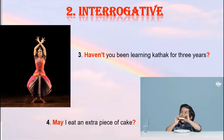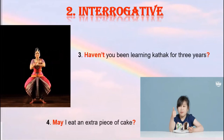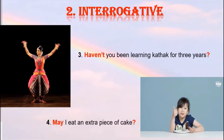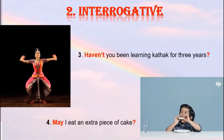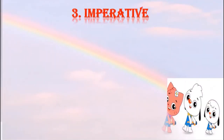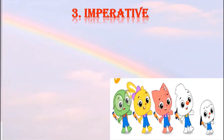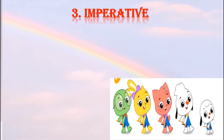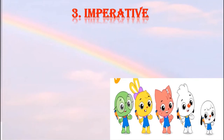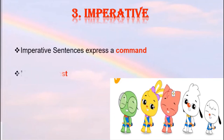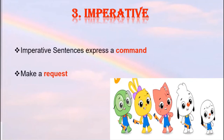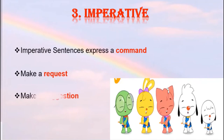Declarative or assertive sentences end with a full stop, and interrogative sentences end with a question mark. Now let us move on to the next type of sentence: imperative. We have three forms of imperative sentences — expressing a command, making a request, and making a suggestion.